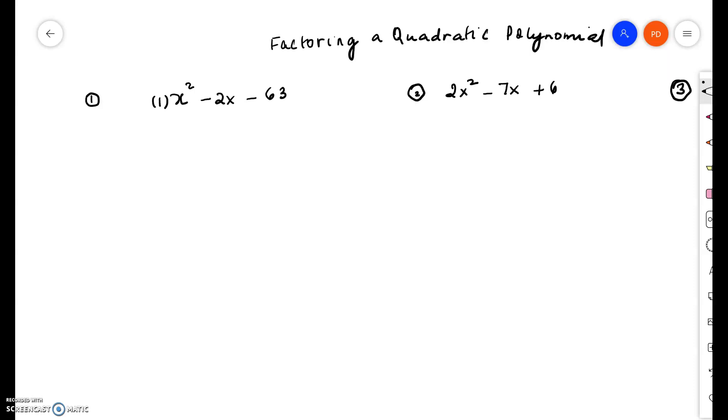So the technique goes this way. First, multiply the coefficient of x squared with the constant. Make sure it is in the right order.